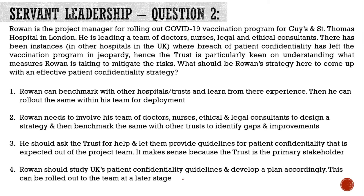That's quite offbeat and something very new as per the current format of the PMP exam — expect a lot of questions like this. Now let's solve another question from the topic of servant leadership. Pause the video and try to answer the question before moving forward — question number two. Option number one says that Rowan can benchmark with other hospitals, learn from their experience, and then roll out the same with his team for deployment. However, this strategy is very individualistic. A servant leader is always inclusive when it comes to decision making, so this option is wrong.